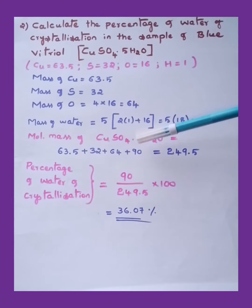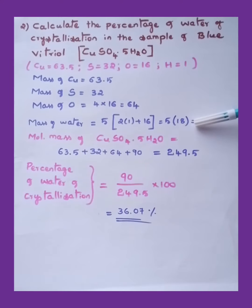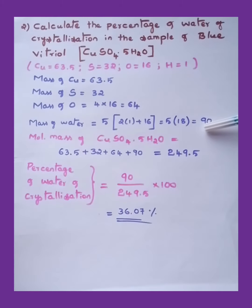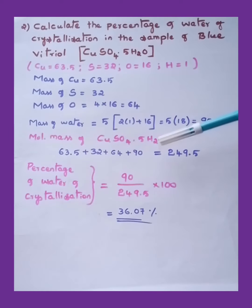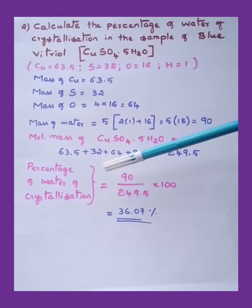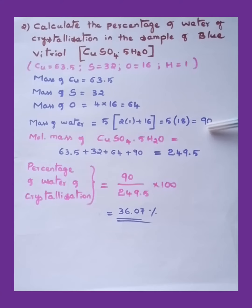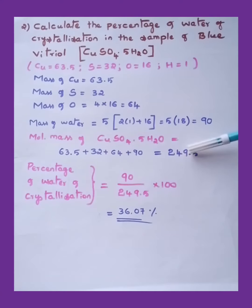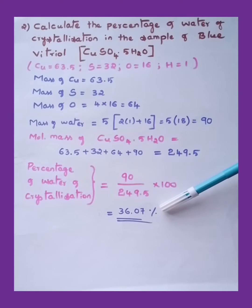Since the question asks about water of crystallization, we use the mass of water together. Mass of water = 90. Percentage of water = 90 ÷ 249.5 × 100 = 36.07%.